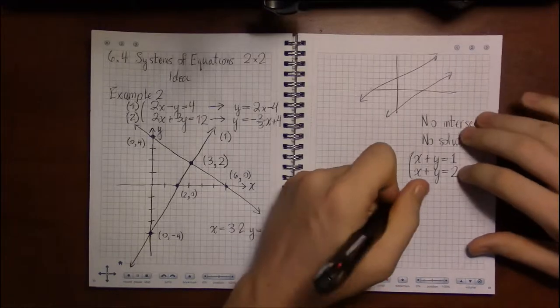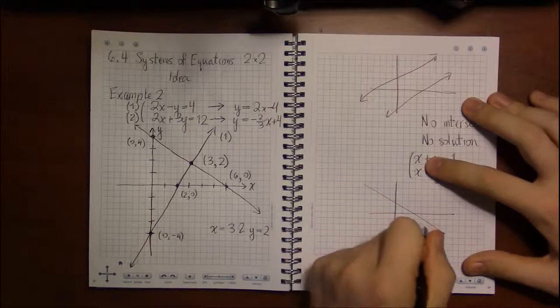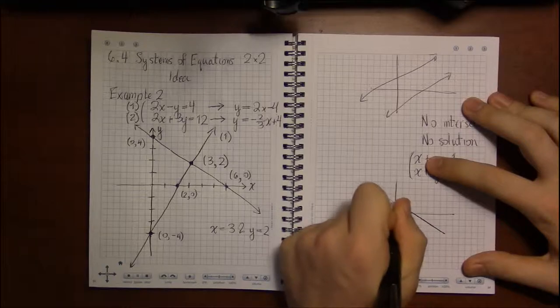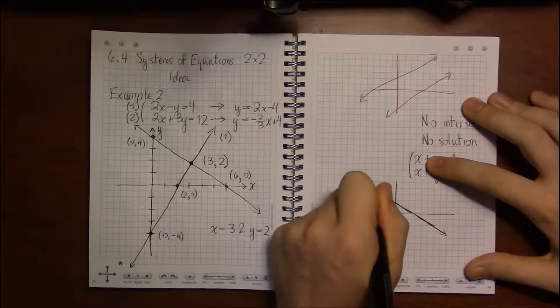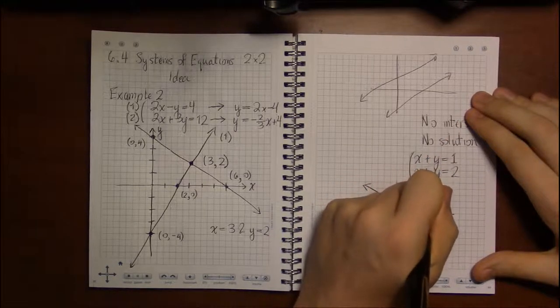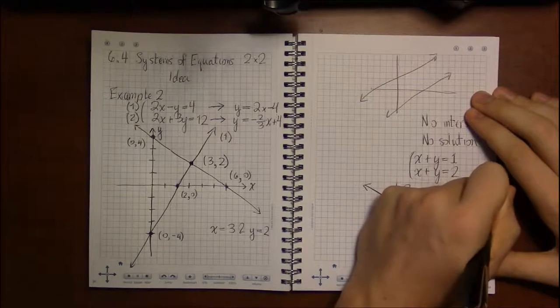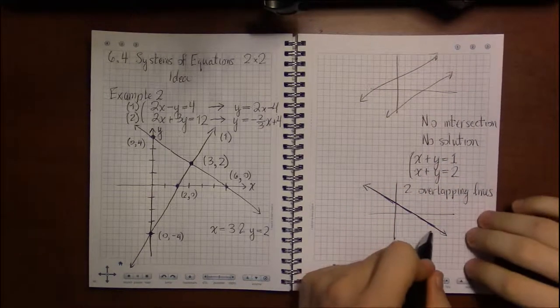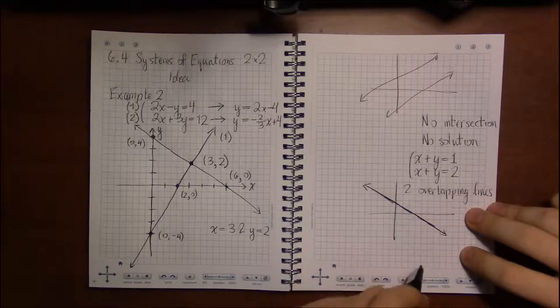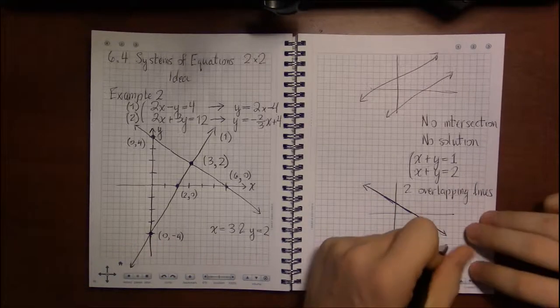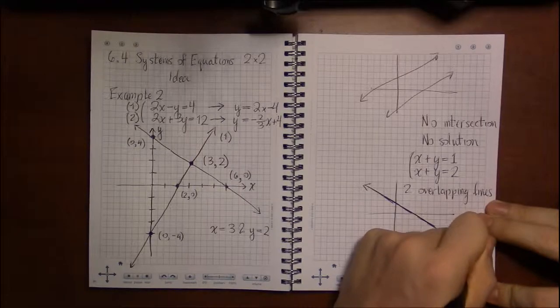There's an even weirder case where the two lines lie right on top of each other, two overlapping lines. So in this case, where do the two lines that sit on top of one another, where do they cross each other? Well everywhere. There are infinitely many intersections.